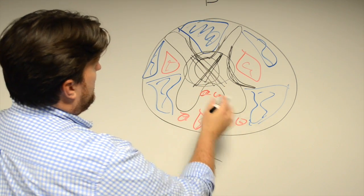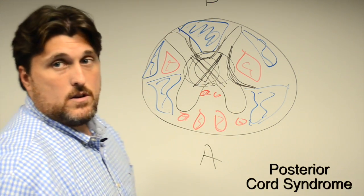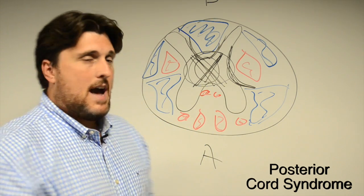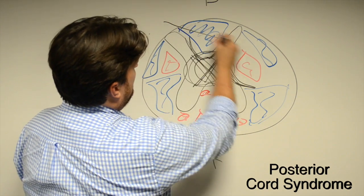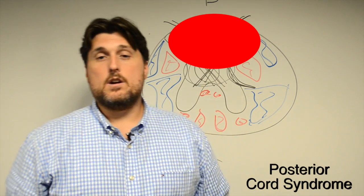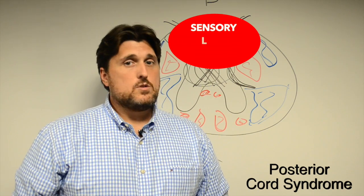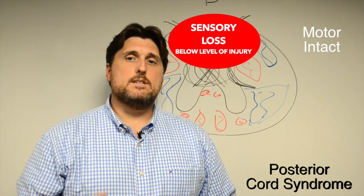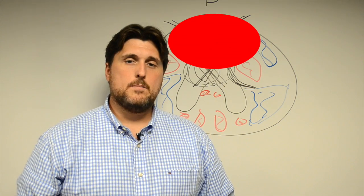Now when we look at the next version, we have posterior cord syndrome. Now that you know the anatomy, what would happen if you were to have an accident that affected your posterior cord or your dorsal column? You're going to lose sensation. You're not going to lose motor. So in posterior cord syndrome, you lose your sensation, but not your motor.